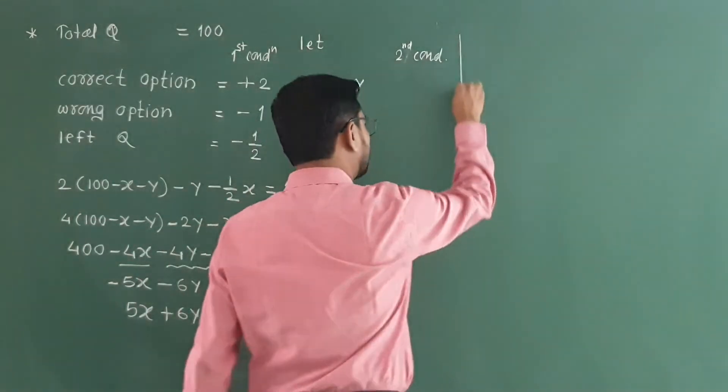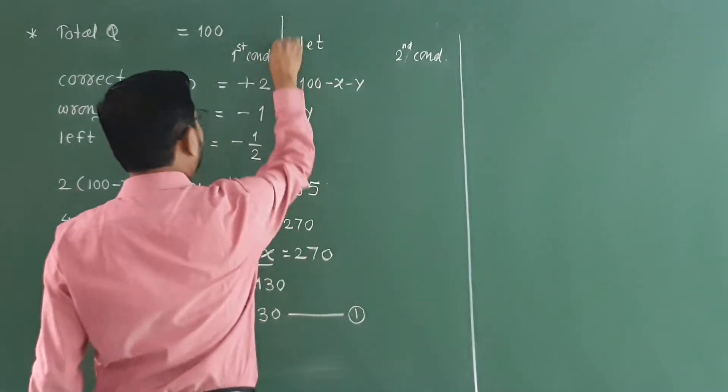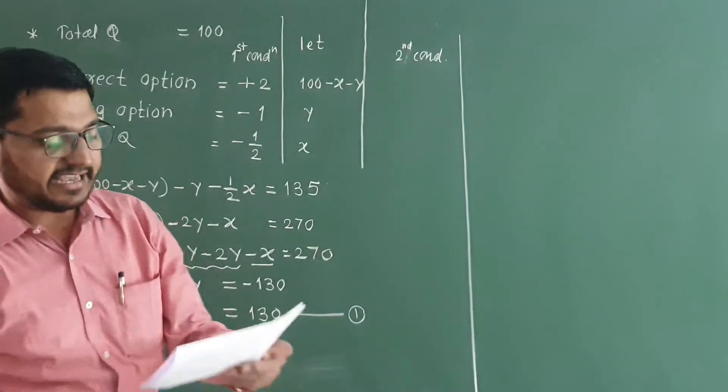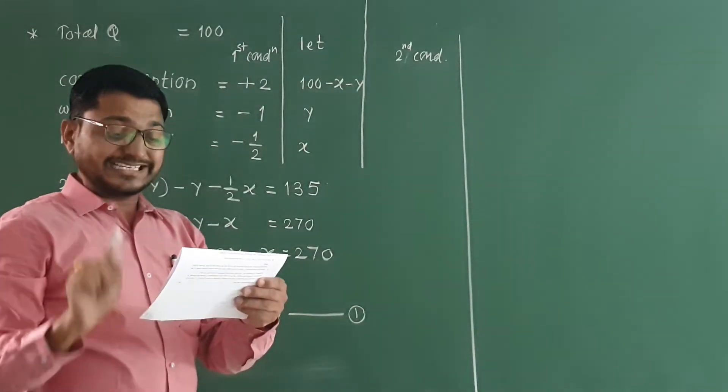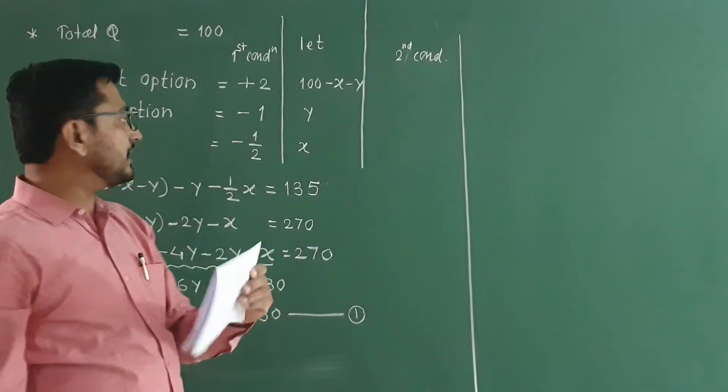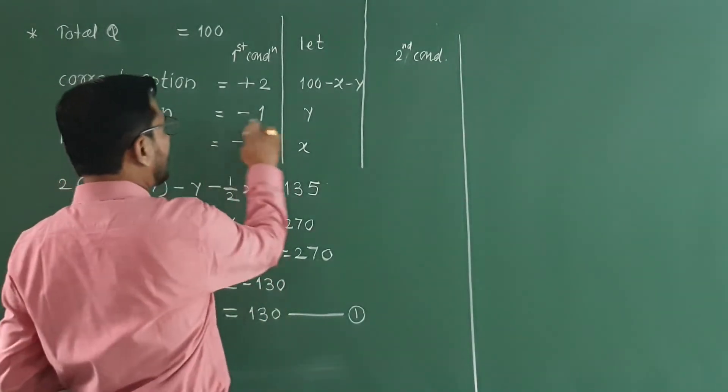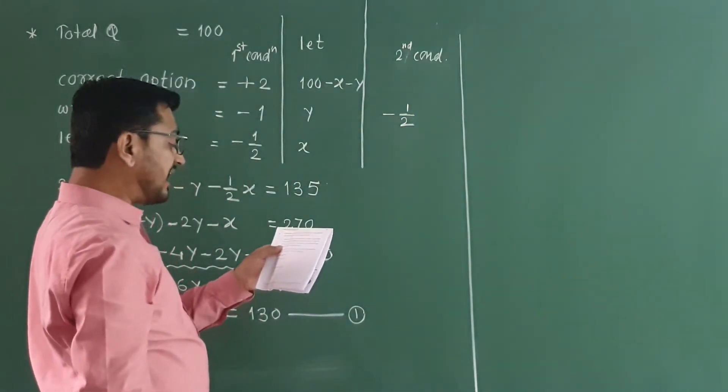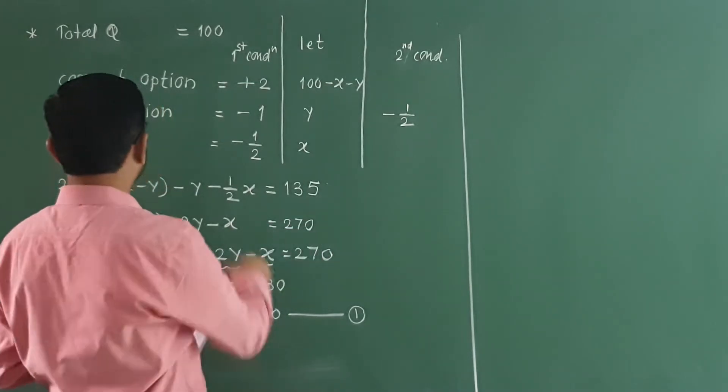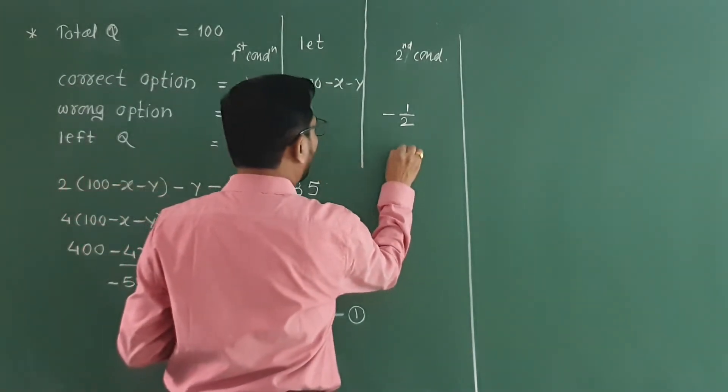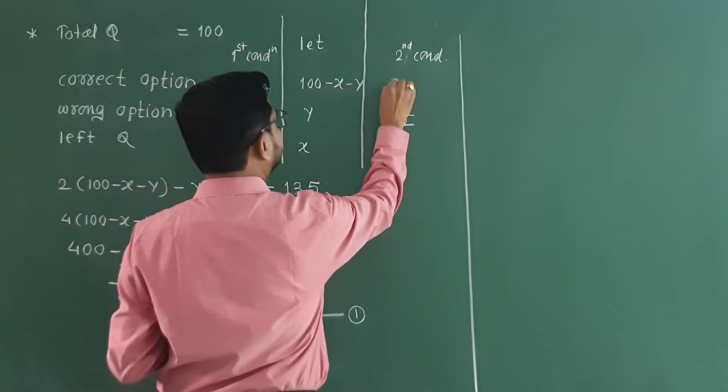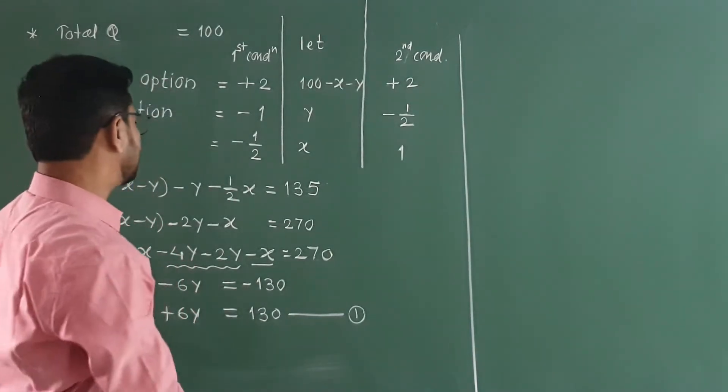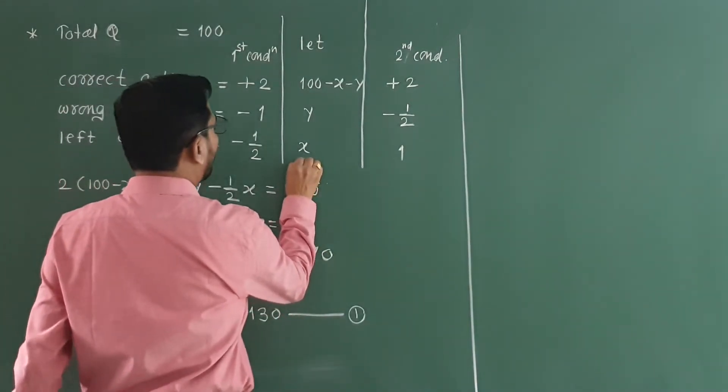Now, second condition. Instead, if half mark is deducted for every wrong answer, and one mark is deducted for every question left, the student scores 133 marks.